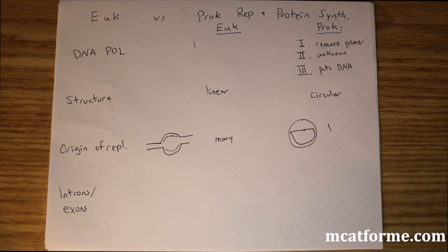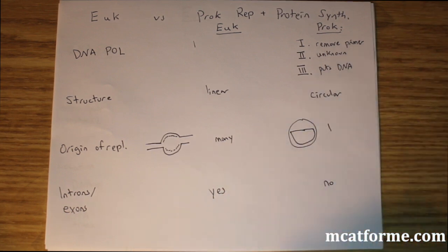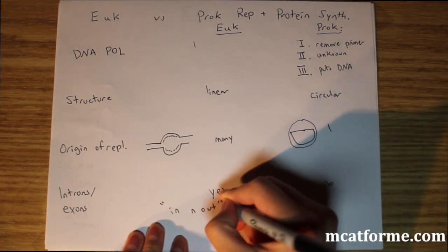Introns and exons—what are those and when are they present? We have them in eukaryotes, but not in prokaryotes. You can think of introns like the fast food restaurant In-N-Out. Introns are removed.